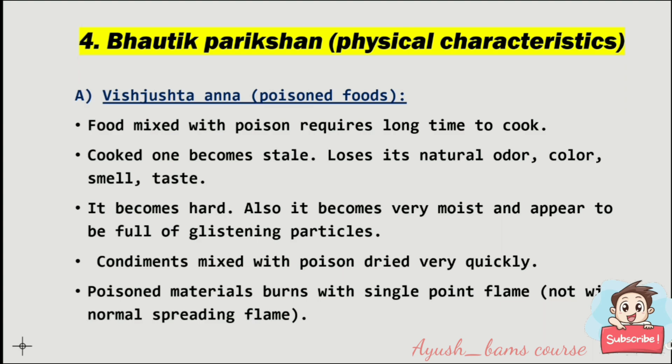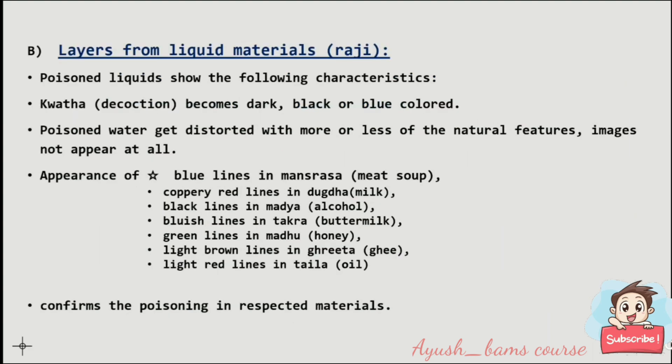Bautik parikshan of poisoned food: food mixed with poison requires a long time to cook. The cooked food becomes stale, loses its natural odor, color, smell, and taste. It becomes hard, very moist, and appears to be full of glistening particles. Condiments mixed with poison rise very quickly. Poisoned material burns with a single-point flame.